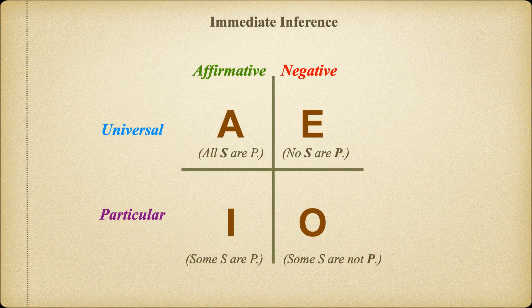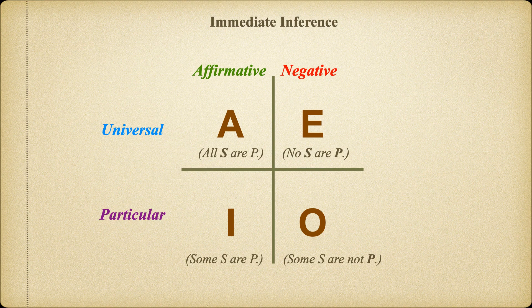In our last video, we learned how to put the four categorical propositions together to form the square of opposition. The A and E, the universal propositions, are on top; the I and O, the particular propositions, on the bottom; the affirmative propositions, A and I, to the left; and the E and O, the negative propositions, on the right.